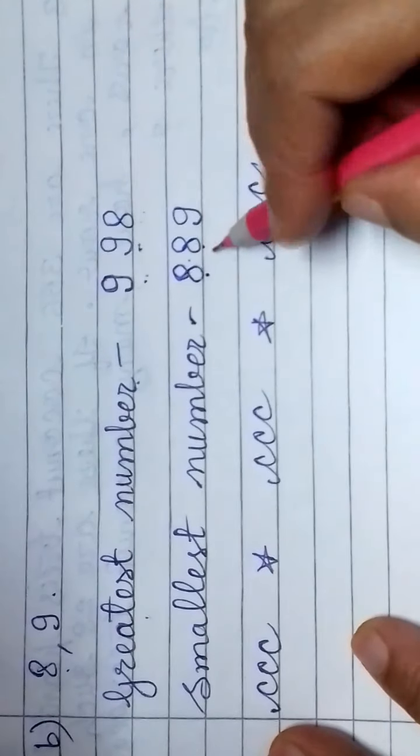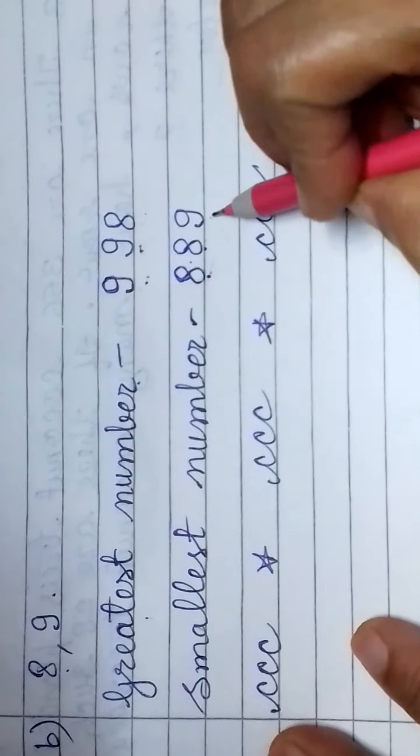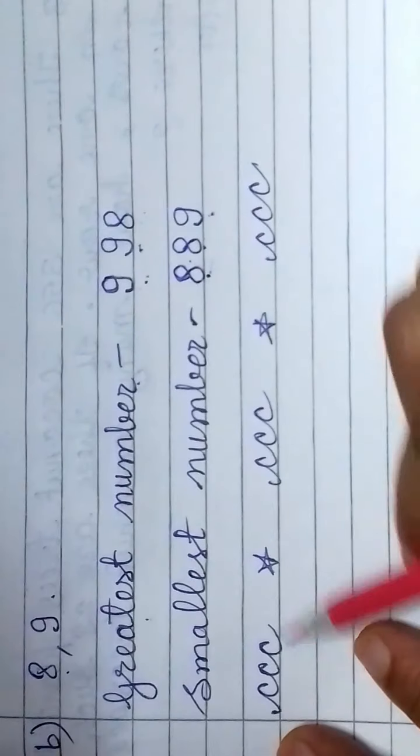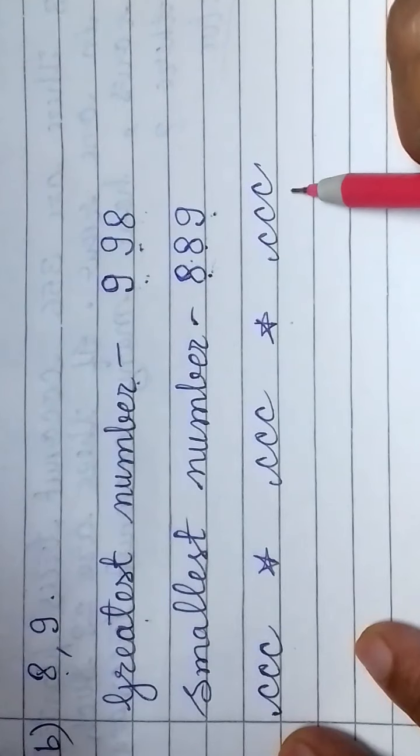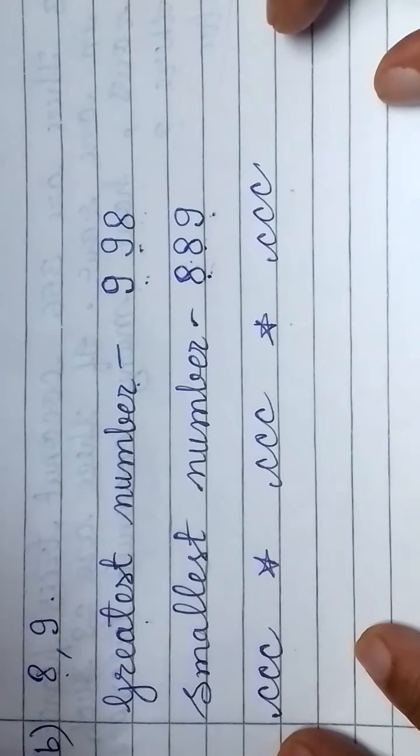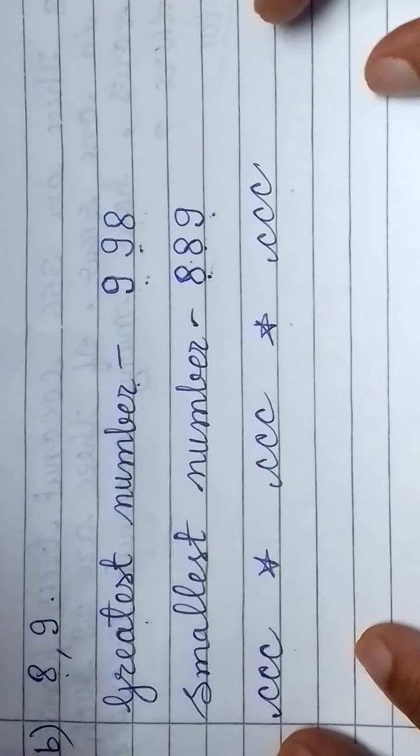Then we have 8, 8, 9, the 3 digit smallest number. After doing this, you make C design star, C design star, C design.